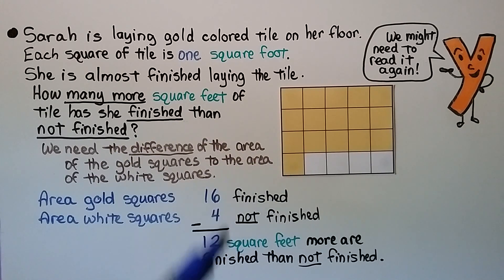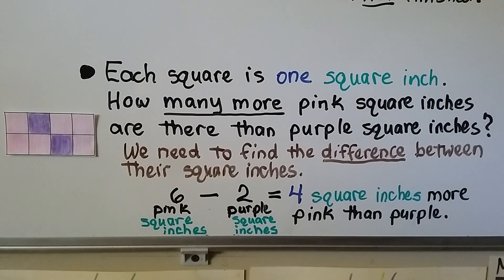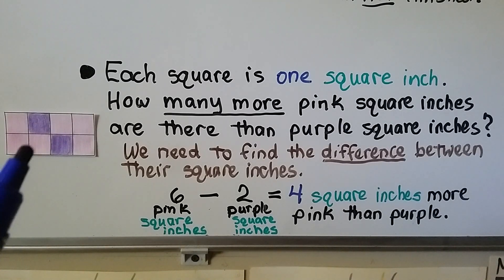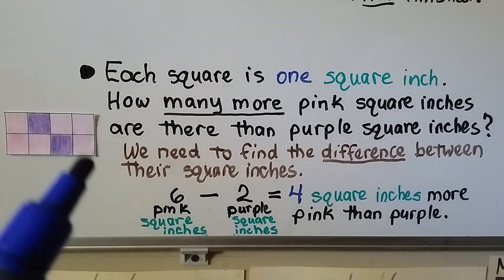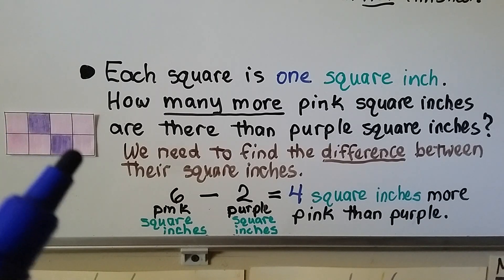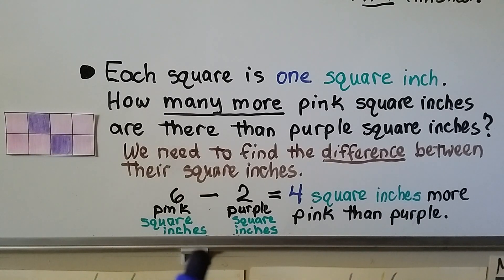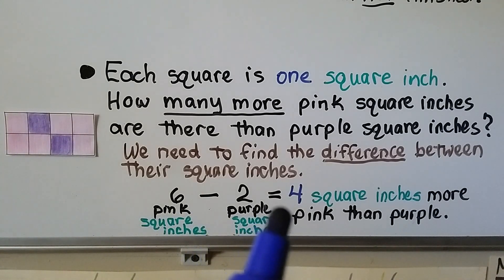Each square was one square foot, so the answer is 12 square feet — and remember, feet is plural for foot. The next problem: each square is one square inch. How many more pink square inches are there than purple square inches? We need the difference. There are six pink square inches and two purple square inches. Six minus two equals four, so there are four square inches more pink than purple.